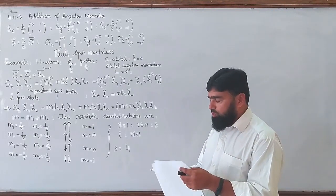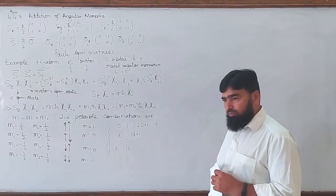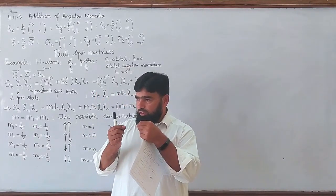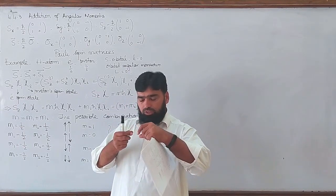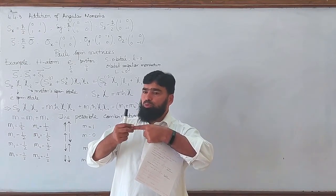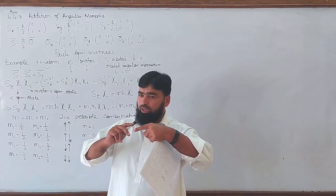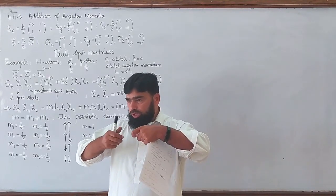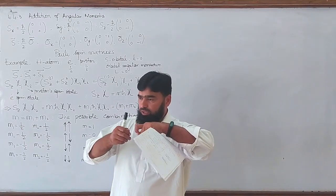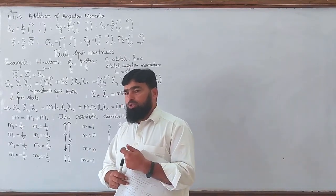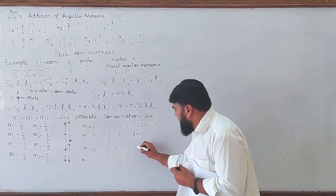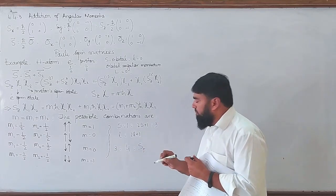The confusion now is that the 2S+1 condition predicts 3 + 1 = 4 total states, but here we found four configurations with some having the same M value of zero. We will have to resolve this. It is like having one thread that is itself made up of two more threads — this twisting we do by applying the raising and lowering operators S+ and S- on these configurations.